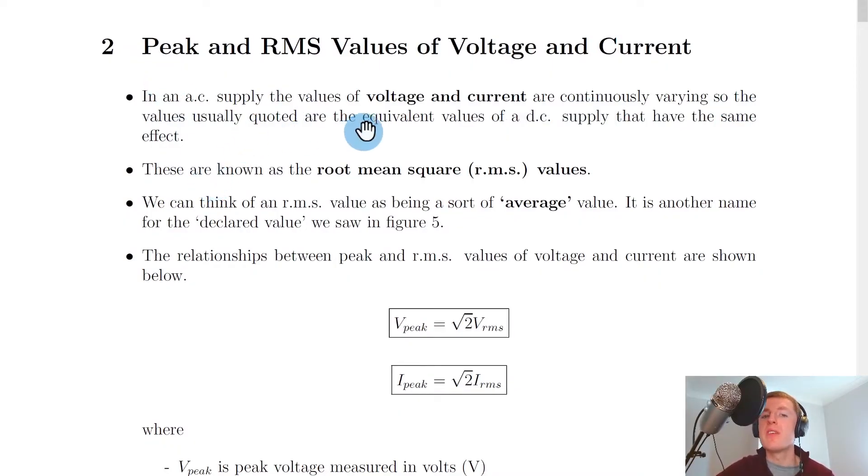Now it says here that in an AC supply, the values of voltage and current are continuously varying, and this is something we've already seen. So the values usually quoted are the equivalent values of a DC supply that have the same effect. These are known as the root mean square, i.e. RMS values.